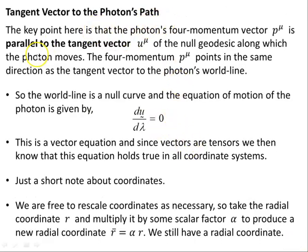Tangent vector, the photon's path. The key point here is that the photon's four momentum vector P mu is parallel to the tangent vector. So you can imagine the four momentum is parallel to the four velocity. You'd expect that, wouldn't you? For both particles with mass and particles without mass. So it is parallel to the tangent vector U mu of the null geodesic along which the photon moves. The four momentum P mu points in the same direction as the tangent vector of the photon's world line.